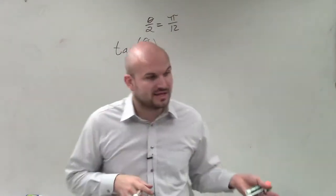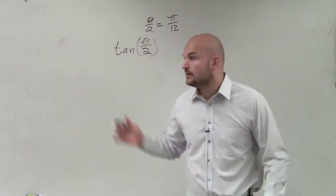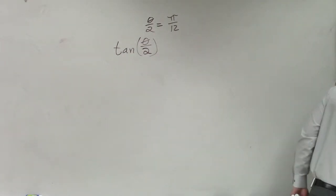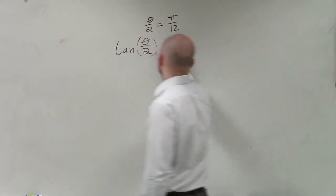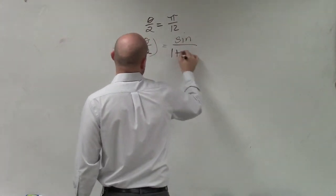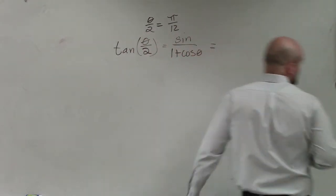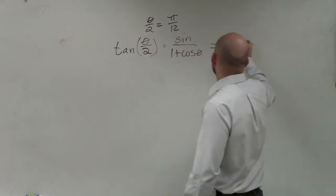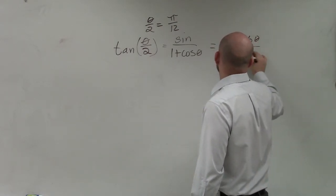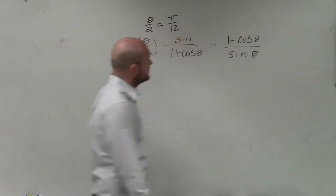Like the double angles for cosine, we had multiple formulas, right? For tangent, we have the same thing, which is sine over 1 plus cosine, or we could also use 1 minus cosine over sine.